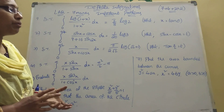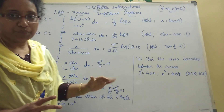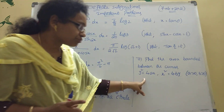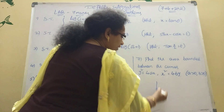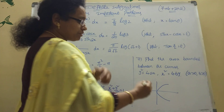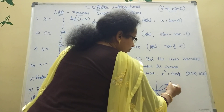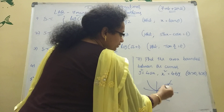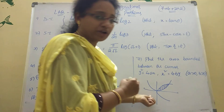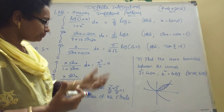Do daily problems and you will get good marks. For the area between curves: y² = 4x passes through the origin like this, and x² = 4by curves like this. You find the area between them — subtract one area from the other. I will upload a separate video explaining this in detail.